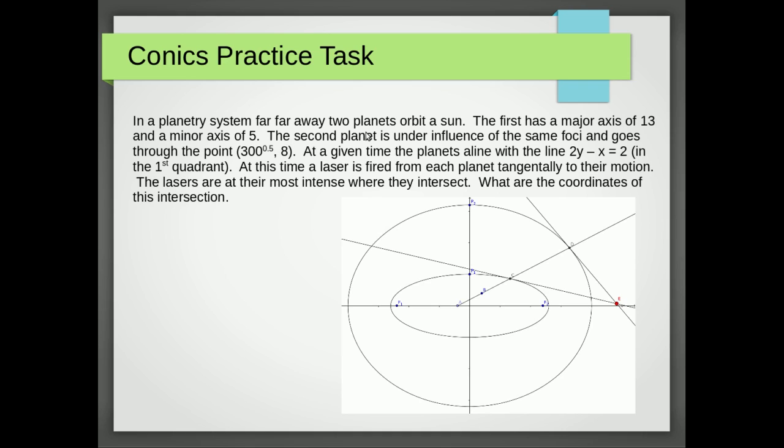In a planetary system far, far away, two planets orbit a sun. The first has a major axis of 13, which basically means from here to here is 13, and a minor axis of 5, from here to here is 5.